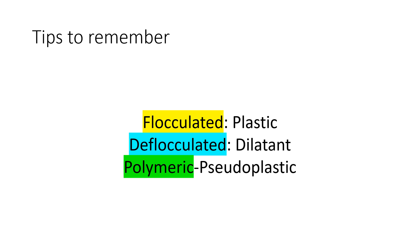To remember this, look at the first and second letters: for flocculated and plastic, the second letter L is the same in both. For deflocculated and dilatant, the first letter D is the same. For polymeric and pseudo plastic, both start with P. This is how you can remember which suspension follows which type of flow.